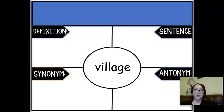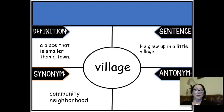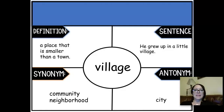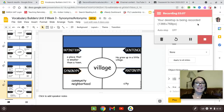And lastly, village — remember, that's a place that's smaller than a town. We used the sentence: he grew up in a little village. Another word might be community or neighborhood. The opposite of a small village would be a great big city. Those are our words — our definitions, antonyms, synonyms, and sentences that go with our words.